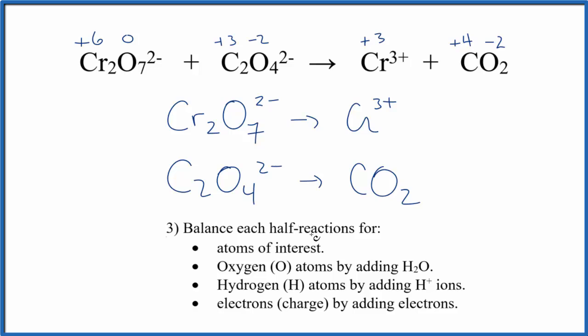Now that we have the half reactions, we can balance each one. We're going to first balance the atoms of interest. Here that's the chromium. We have two chromium, so we need to put a two here. Down here we have two carbons, so we need a two here to balance the carbons.